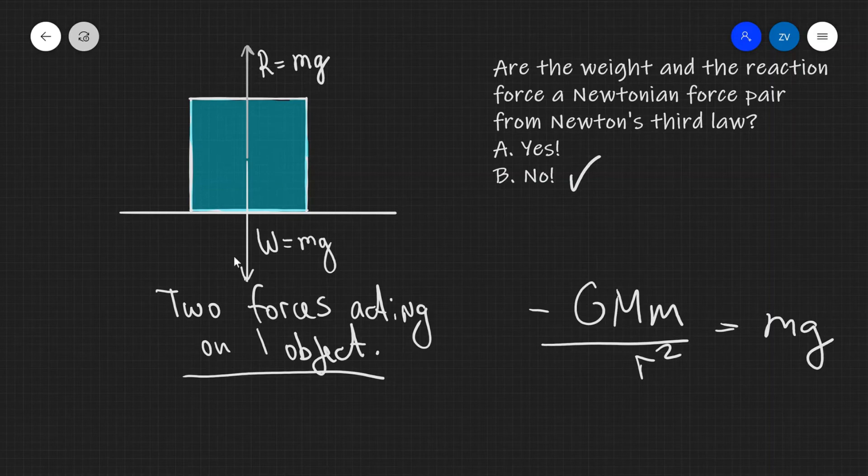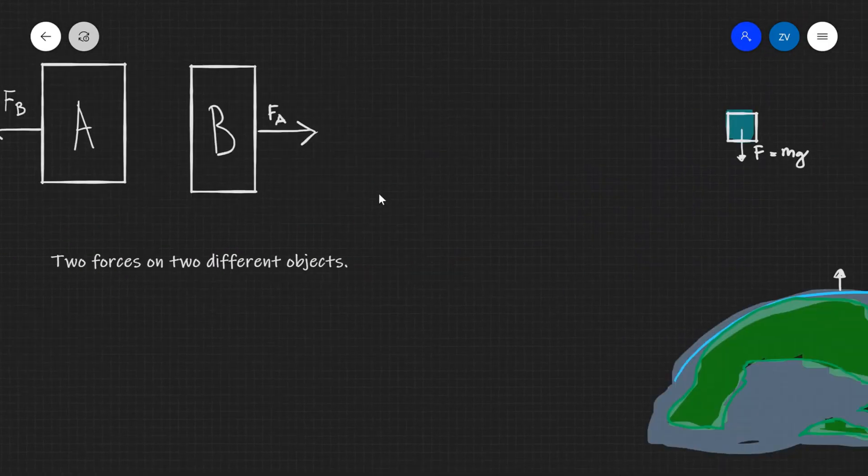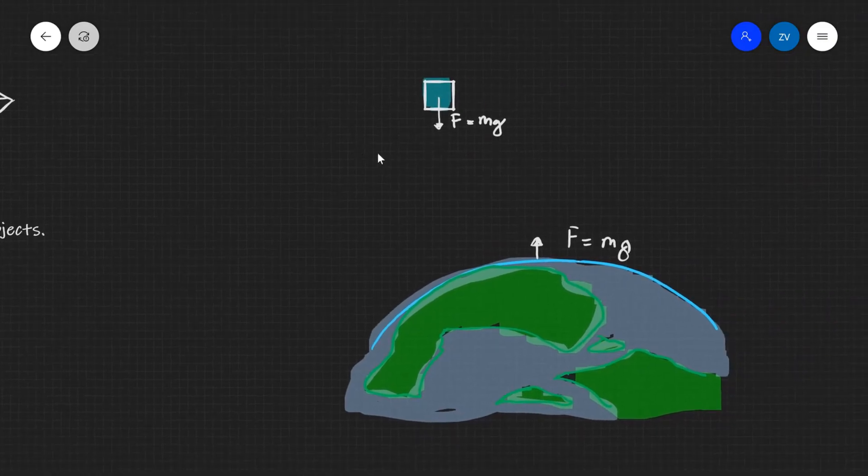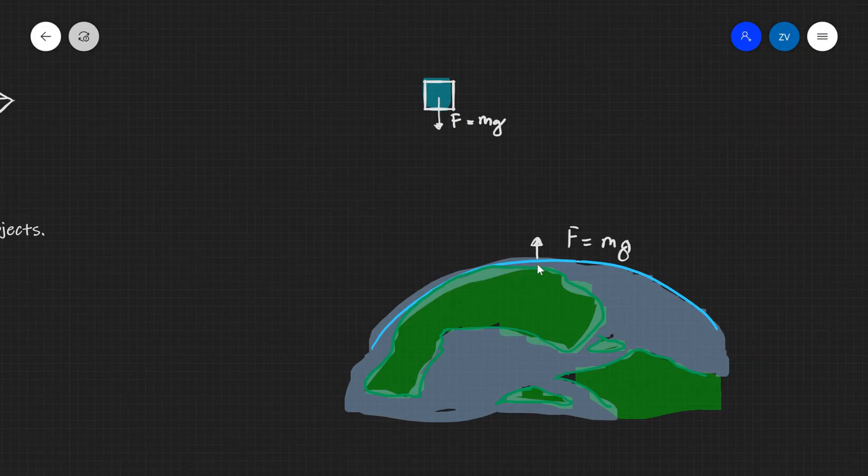What is the second object that is interacting to produce this force due to gravity? Well, the answer is actually the earth. So every time the earth pulls something down, the earth is actually pulled a little bit up by the exact same force.